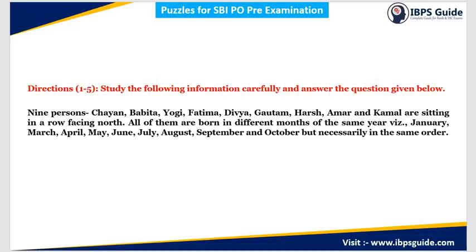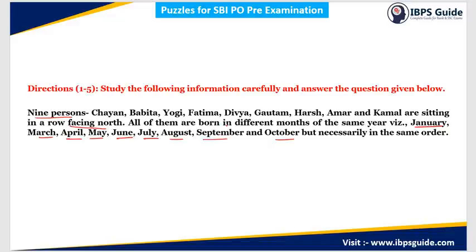The direction says: study the following information carefully and answer the questions given below. There are a total of 9 persons — Chayan, Bhavita, Yogi, Fatima, Divya, Gautam, Harsh, Amar, and Kamal — sitting in a row facing north. All of them are born in different months of the same year: January, March, April, May, June, July, August, September, and October, but not necessarily in the same order.